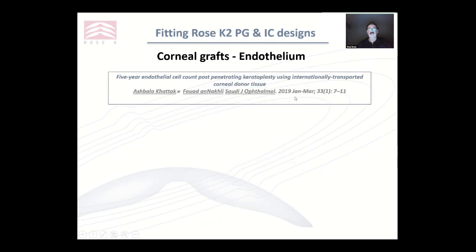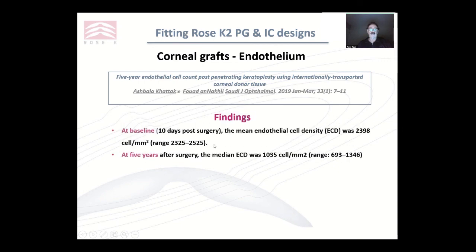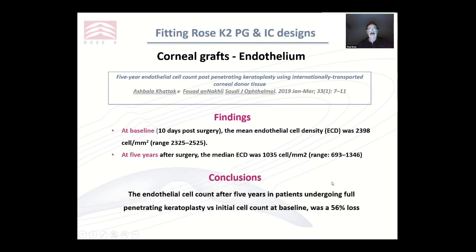Looking at a couple of studies: one done in 2019 with penetrating keratoplasties showed that at baseline the average cell count was around 2,400. After five years, that had dropped to just under 1,000 — a 56% loss of endothelial cells over five years. So it's important to look at the graft: how old is it? Is it going to tolerate a semi-scleral lens, or should I try first with a corneal lens?